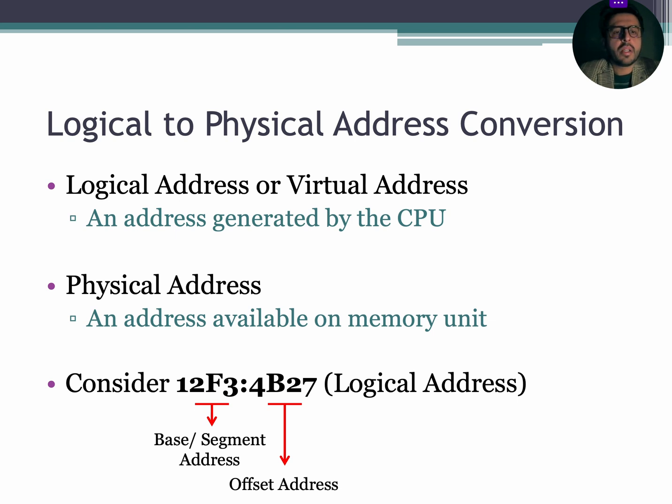Do remember that logical addresses are changeable. CPU can change the logical address accordingly. IP addresses can be considered as an example of logical address. On the other hand, physical addresses are fixed and they cannot be changed. Mobile IMEI numbers or MAC addresses are the examples of physical address. Do remember that you can convert logical address to physical address, but it's not feasible to convert physical address back to logical address.